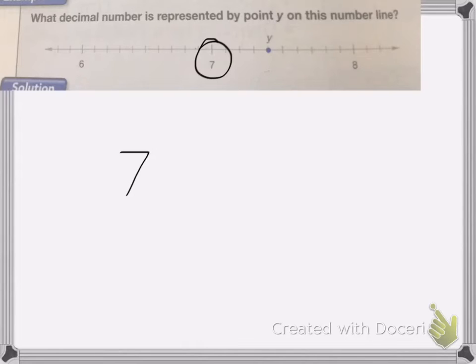To do that, I need to count over how many places were in the line. So 1, 2, 3, 4. That means we have 7 and 4 tenths.